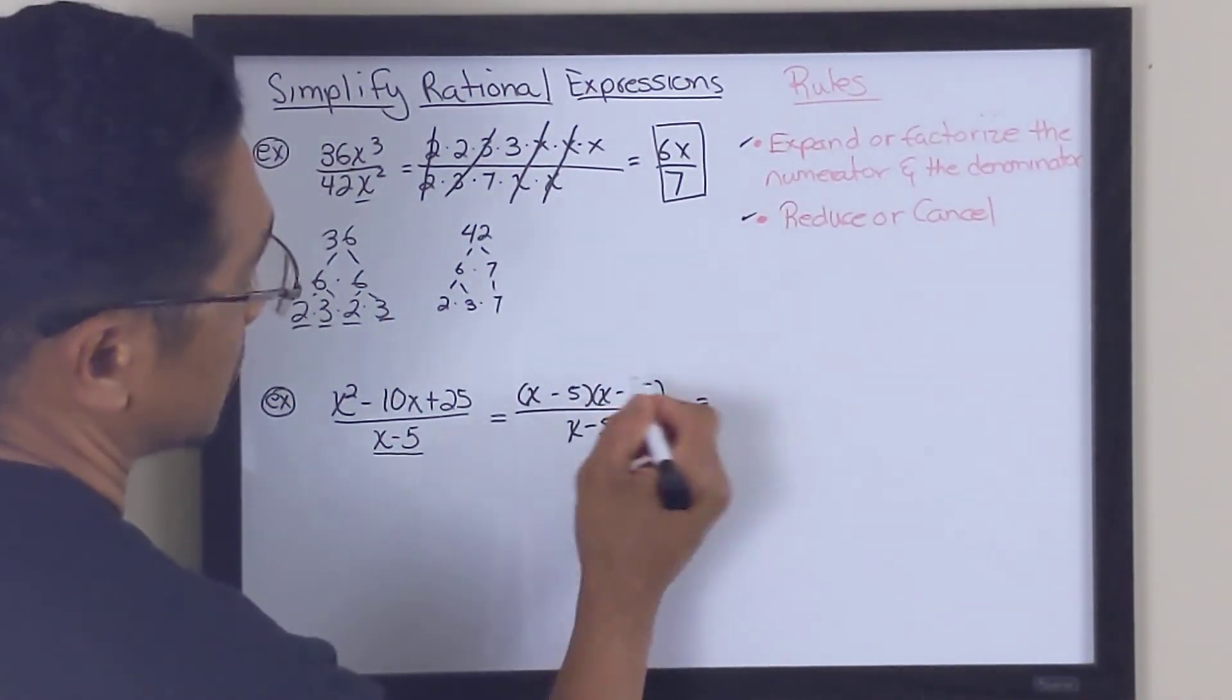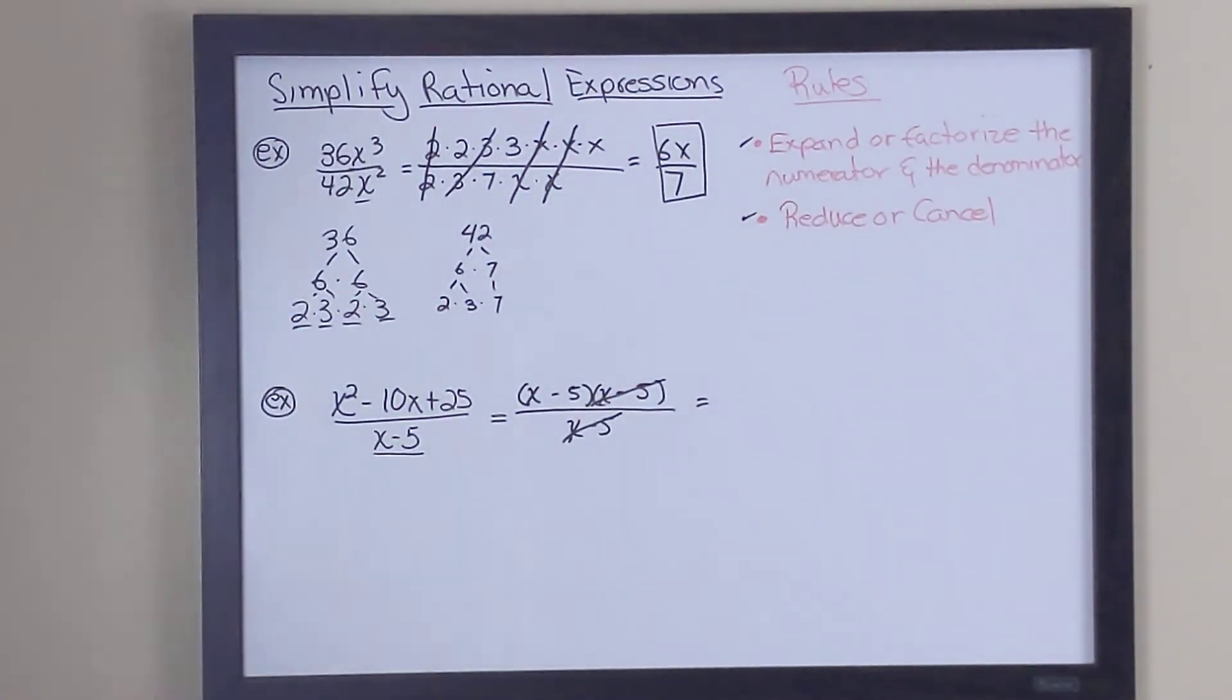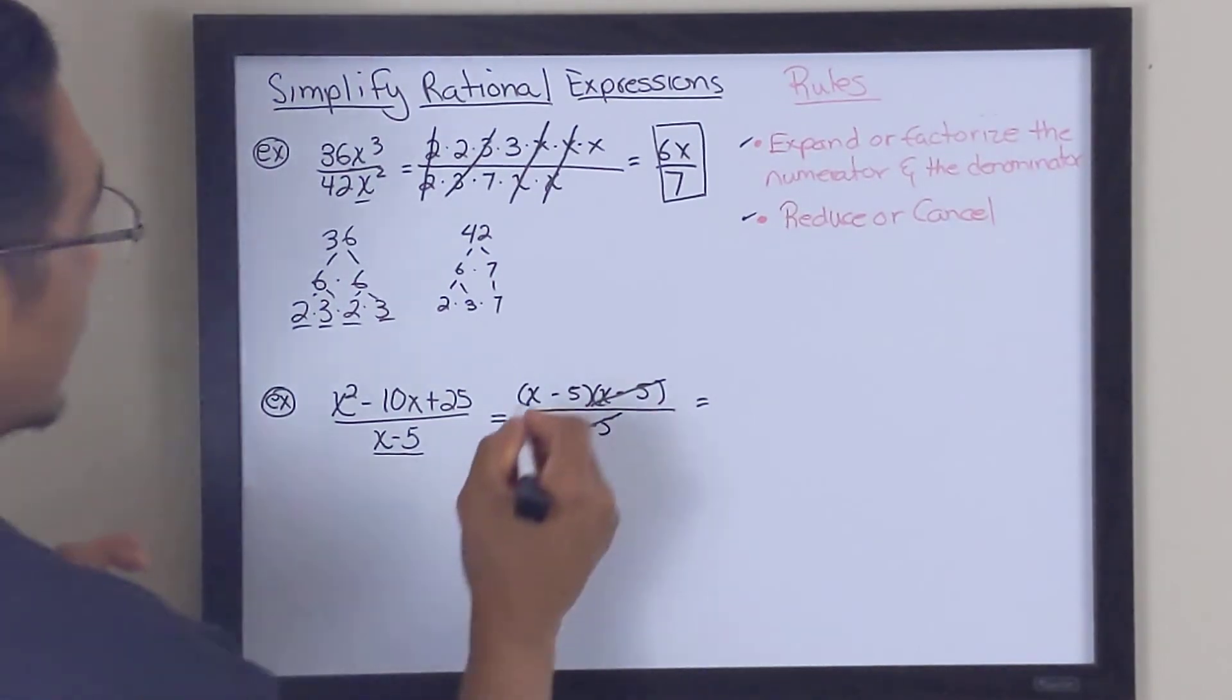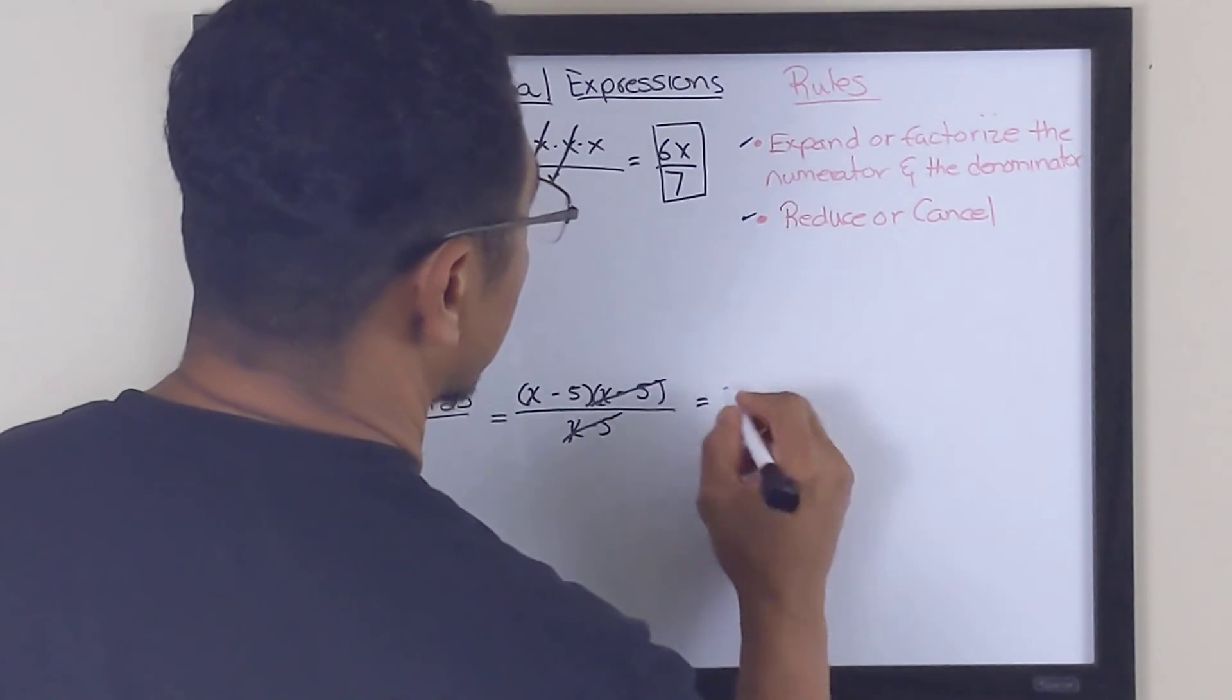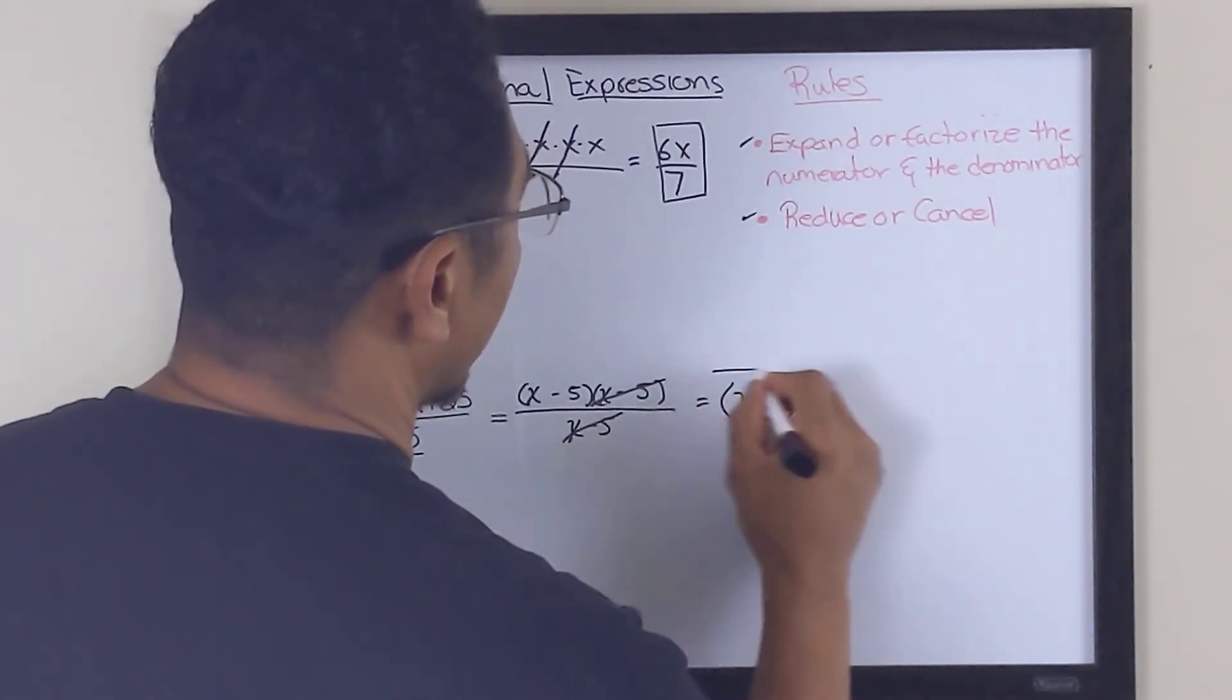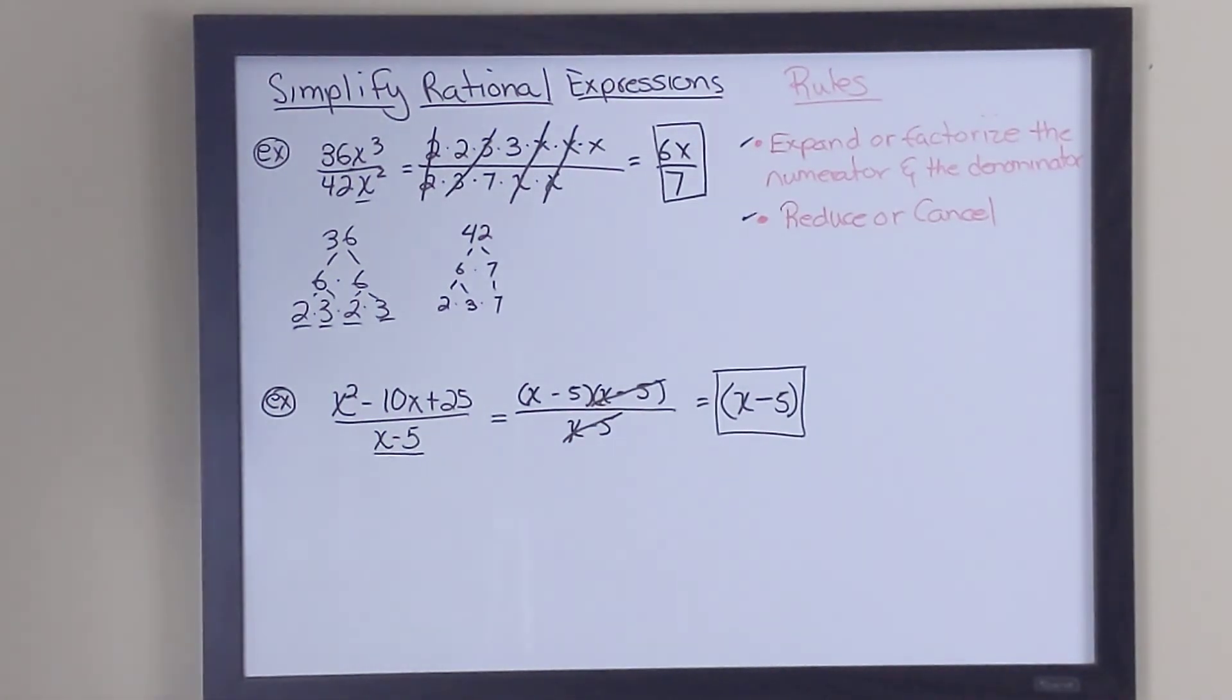So what I'm going to do is I'm going to use this one. So x minus 5 cancels one on one, okay? And I'm left with x minus 5 in the numerator. So my answer here is x minus 5. Once again, if you have any questions on this video, basically just rewind and look to see what we did for each particular step. Thank you.